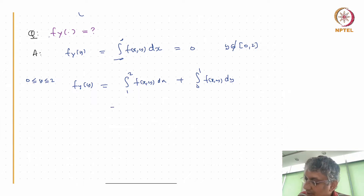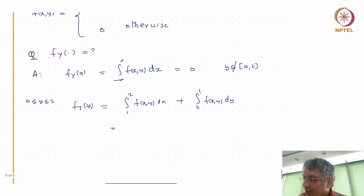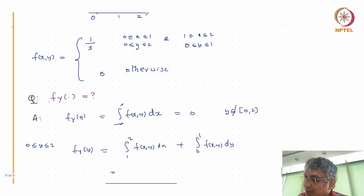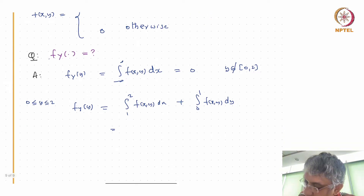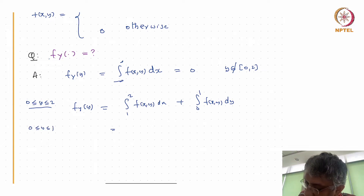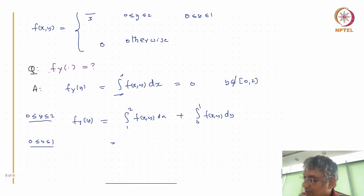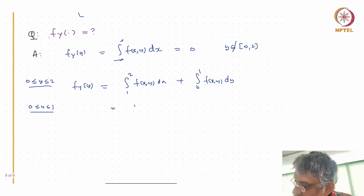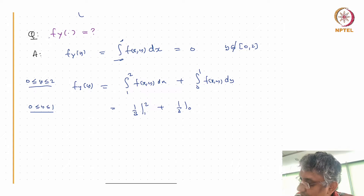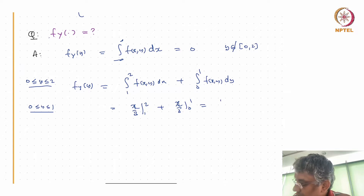First case: 0 < y < 1. Then both pieces matter. When x is between 1 and 2, the density is 1/3 — integral from 1 to 2 gives 1/3. When x is between 0 and 1, the density is also 1/3 — integral from 0 to 1 gives 1/3. So total is 1/3 + 1/3 = 2/3.